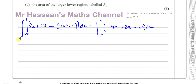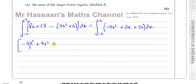So I'm going to now integrate this. That's going to be minus 4x cubed over 3, plus 8x squared over 2 which is 4x squared, plus 32x. No need to put plus c because it's a definite integral.